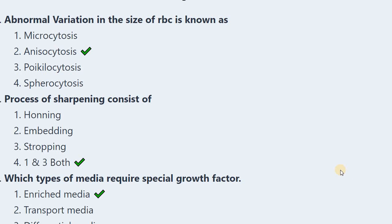Question number one: Abnormal variation in the size of RBC is known as — A) microcytosis, B) anisocytosis, C) poikilocytosis, D) spherocytosis. The correct answer is B, anisocytosis.